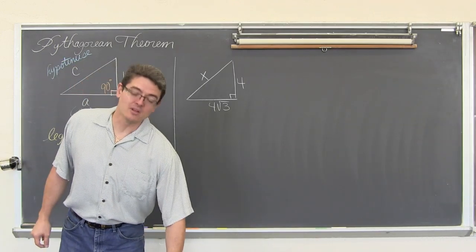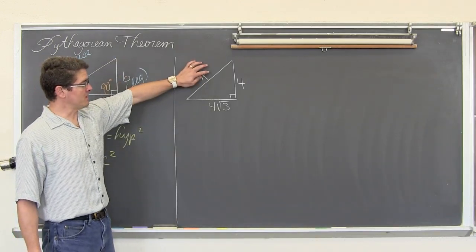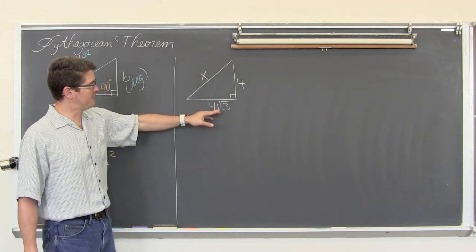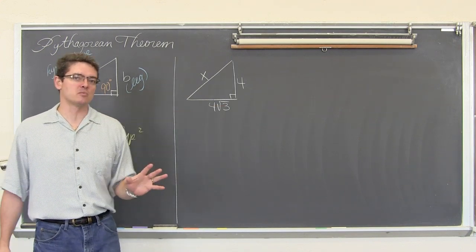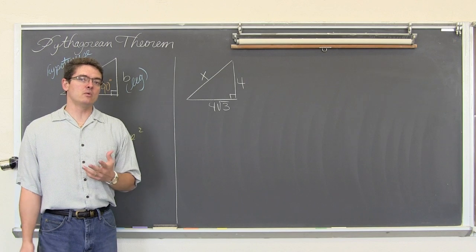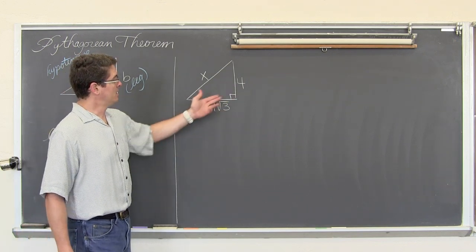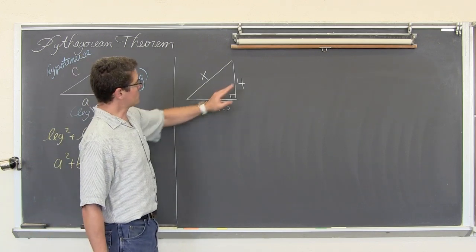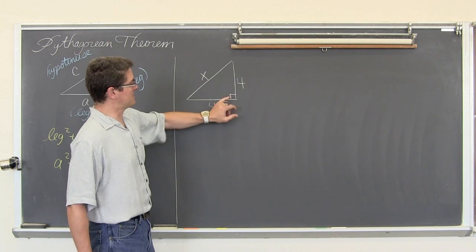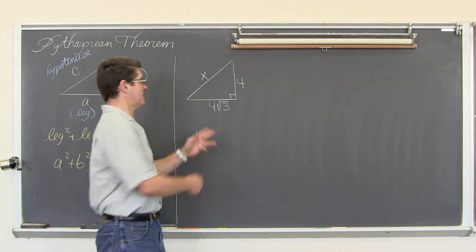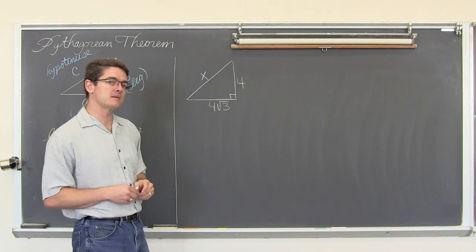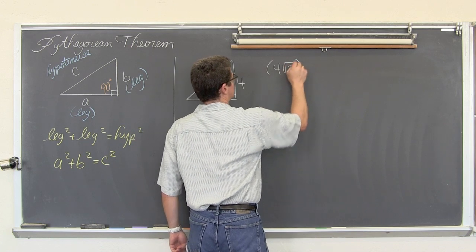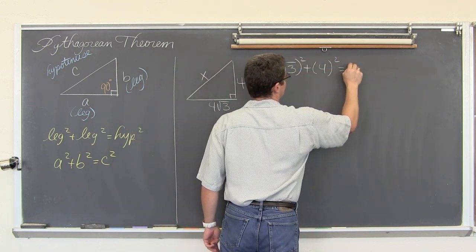For our next example, we have the variable on the hypotenuse. Students do generally get these correct more often when first learning the process. But I have 4 square root of 3 as one of the sides, so we are increasing the difficulty by having a radical in the problem in the first place. Using a squared plus b squared equals c squared, the two legs stay together on the same side. So we have 4 square root of 3 squared plus 4 squared equals x squared, the hypotenuse squared.